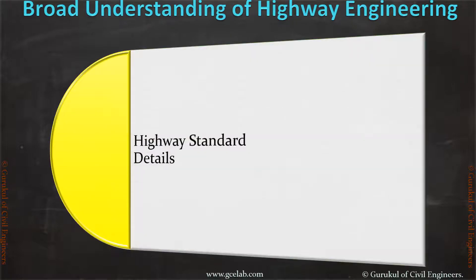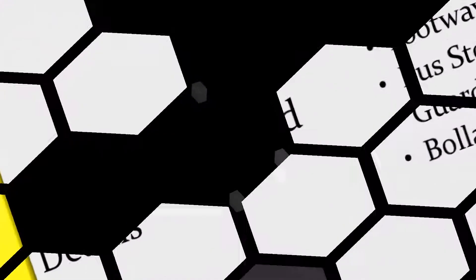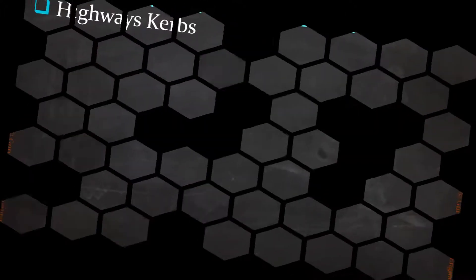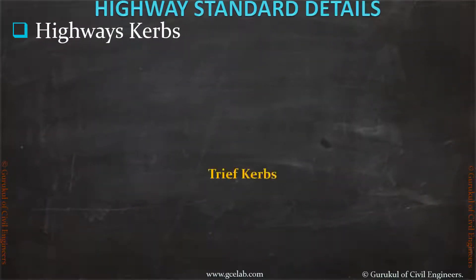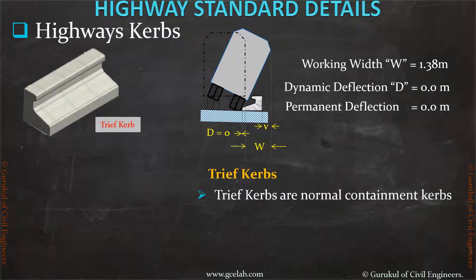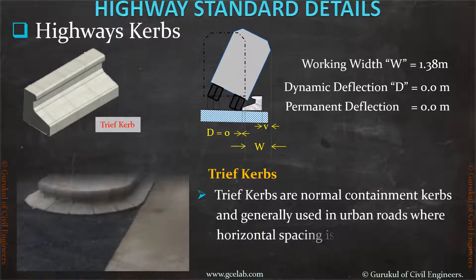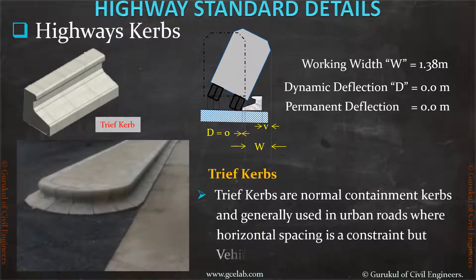In standard details, we will cover all highway details such as pavement details, curbing and edging details, footpath details, bus stop details, etc. As an example, tree-type curbs are normal containment curbs, generally used in urban roads where horizontal spacing is a constraint but a vehicle restraint system is required.